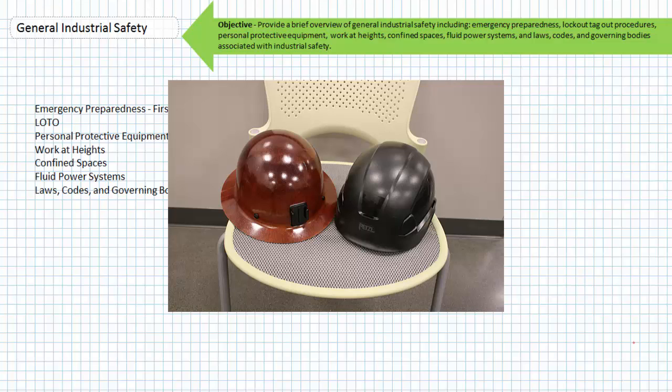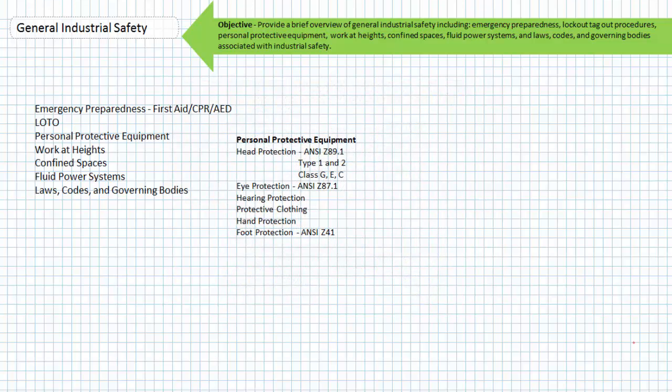Type 2 hard hats, noted by a brim around the perimeter, also protect against impacts to the side of the head. Hard hats are differentiated by three different classes: G, E, and C. A general or G class hard hat can protect up to 2,200 volts or 2.2 kilovolts.